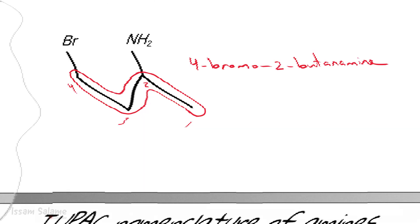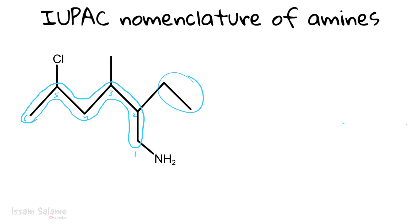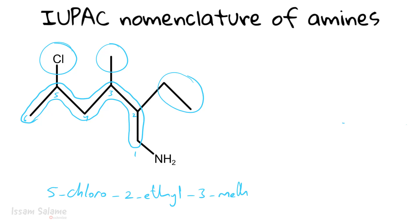Let's look at a slightly more complicated structure. We find the longest chain and give priority to the amino group, numbering from the end closer to it: carbon one, two, three, four, five, and six. We have three substituents — ethyl, methyl, and chloro — named in alphabetical order. The full name is 5-chloro-2-ethyl-3-methyl-1-hexanamine.